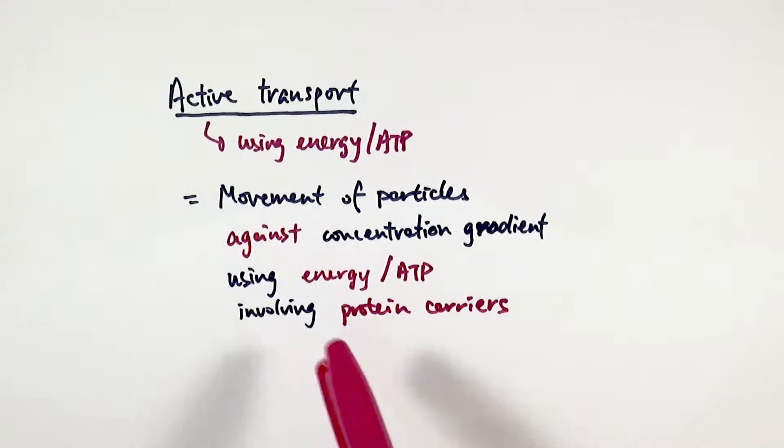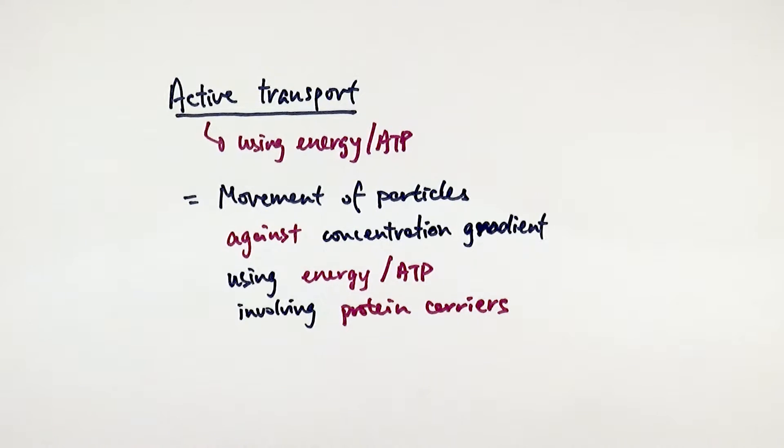So you can see I've broken it down to several parts because by definition in an exam if you are asked as a two mark question to define this, this is what you need to say. Notice that it's no longer called the net movement because this time we are using energy, it's directed. It's not that the particles are free to go anywhere, but this time we have to actively move them against the concentration gradient. So it's not free, it's not overall, it's just movement.